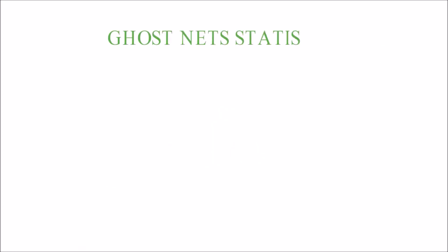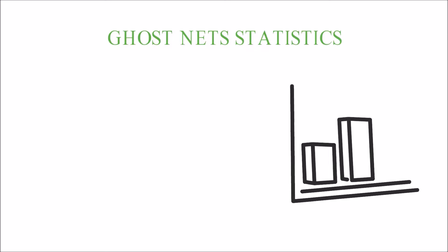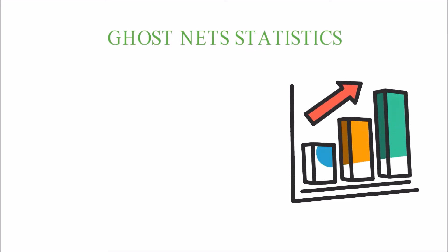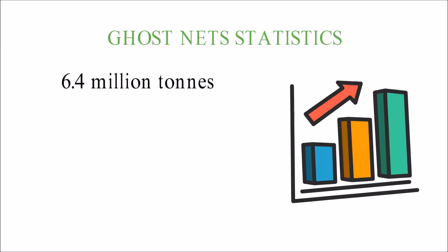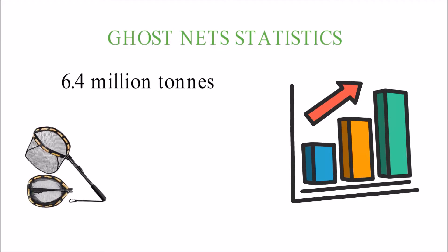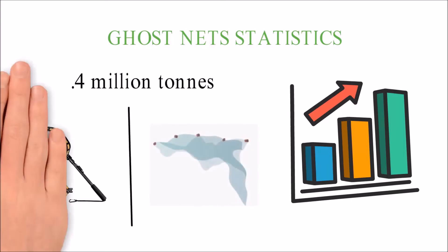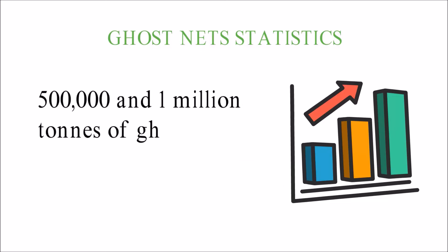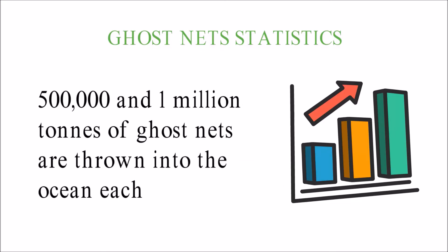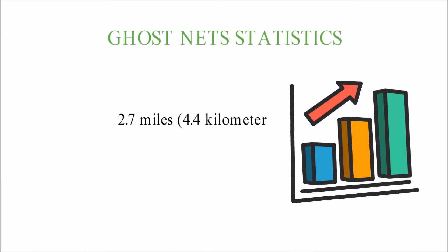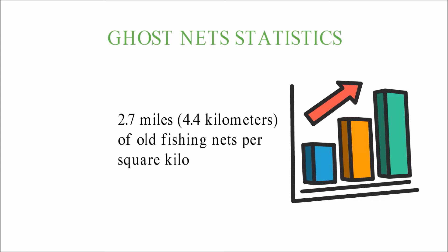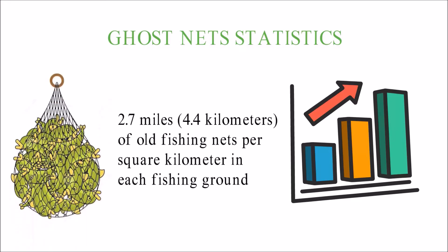Ghost nets statistics. Recent scientific data shows a steady rise in the number of ghost nets in the world's oceans over the last few years. Hundreds of fishing nets are lost at sea every year. About 6.4 million tons of foreign trash enter the ocean each year; 10% of this is made up of old fishing gear and other plastics, like ghost nets. Between 500,000 and 1 million tons of ghost nets are thrown into the ocean each year. Marine scientists say there are about 2.7 miles (4.4 kilometers) of old fishing nets per square kilometer in each fishing ground.